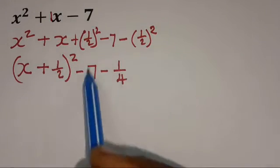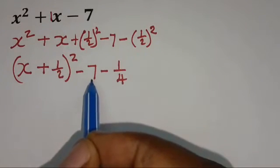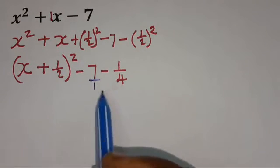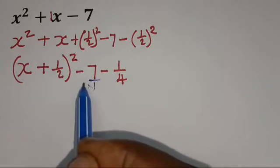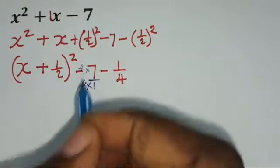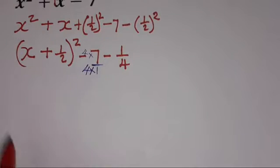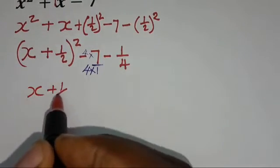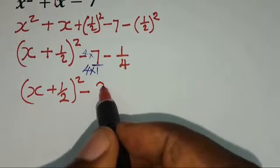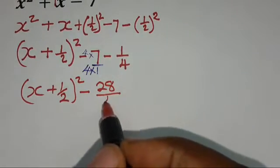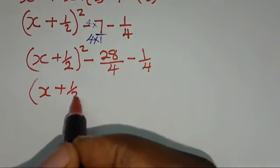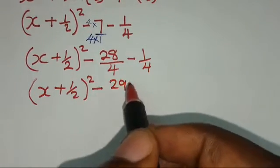So what is remaining is just to simplify these fractions. This is an integer and it can be written as a fraction. The common denominator is 4. So we are supposed to make this denominator to be 4 as well by multiplying it by 4. What you've done on the denominator, you also do it on the numerator so that the value of the fraction remains the same. So we're going to have x plus 1 over 2, everything squared, minus 4 times 7 is 28 over 4, minus 1 over 4. So we're going to have x plus 1 over 2 squared minus 29 over 4.